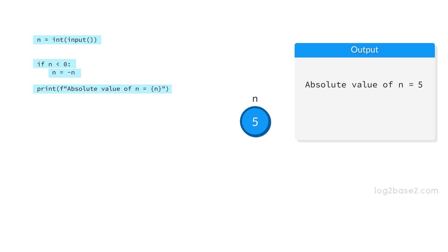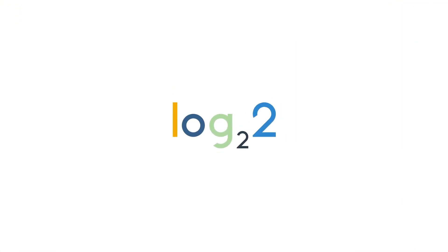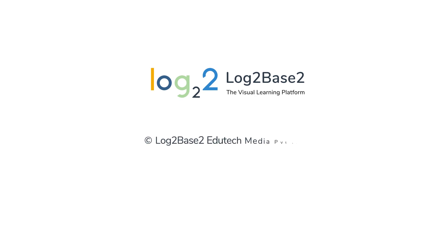So today we have discussed about the absolute value of a number. The absolute value of a number is the distance between the origin and that number on the number line. In the next video, we will discuss about how to find the sum of natural numbers.